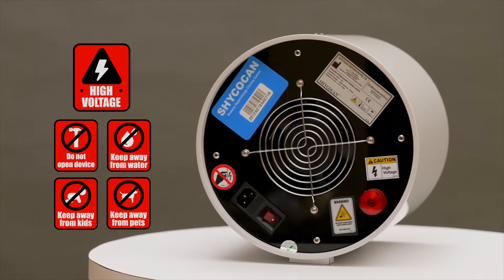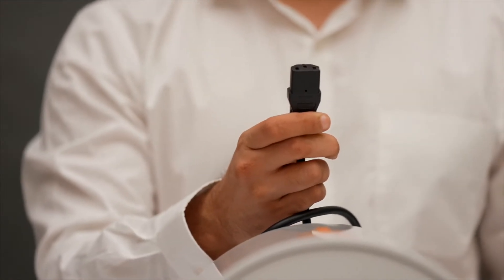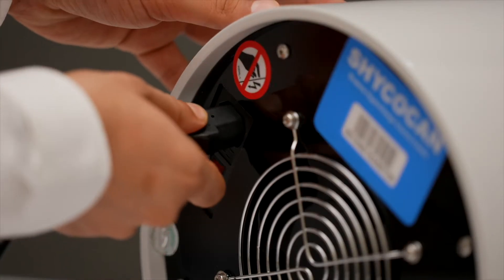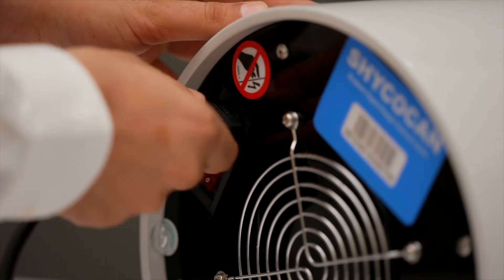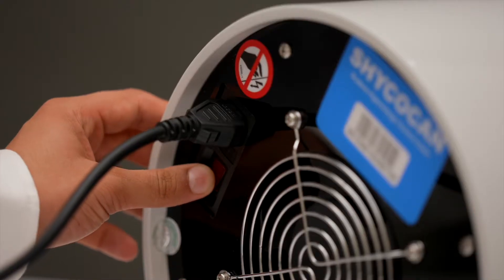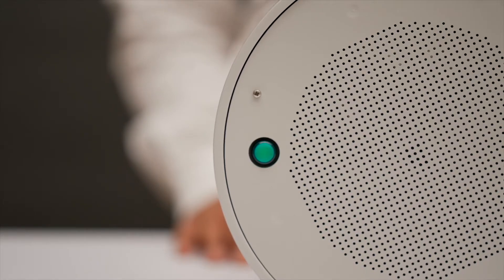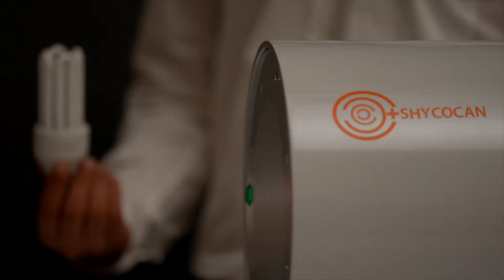Time to get started. Insert one end of the power cord into the socket available on the device's back plate and plug the other end into the power supply. Turn on the switch. The green light on the device illuminates, indicating that the device has started working.